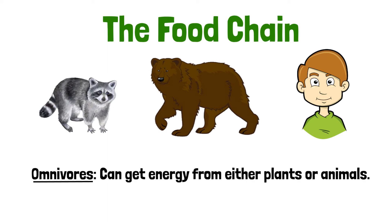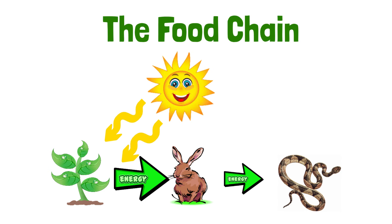Remember, arrows in a food chain show which direction energy is being passed. And the further a food chain continues, the less energy there is available for the next organism.